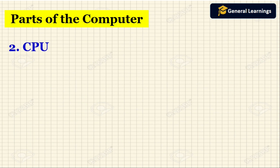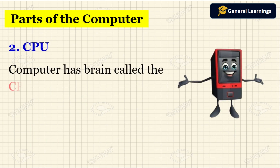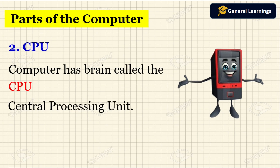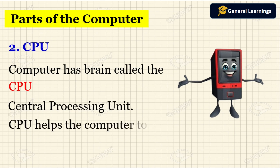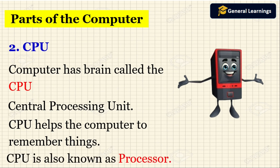The next part we are going to see is the CPU. Just like our human brain, the computer also has a brain called the CPU. CPU means Central Processing Unit. The CPU helps the computer to remember things and is also known as the processor.